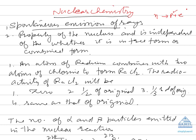Now the questions you can get from this chapter: Let us take question number 1. An atom of radium combines with 2 atoms of chlorine to form radium chloride. The radioactivity of radium chloride will be? As I have already told you, it is the property of the nucleus and is retained even when the element has formed a compound. So the answer will be: it will have the same radioactivity as that of the original.